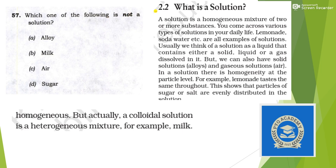Next: which of the following is not a solution? A solution is a homogeneous mixture — examples include lemonade, soda water, alloys (solid solutions), and air (gaseous solution). Sugar dissolved in water is also a solution. However, milk is a colloid — a heterogeneous mixture — so it is not a solution. Answer is option B.